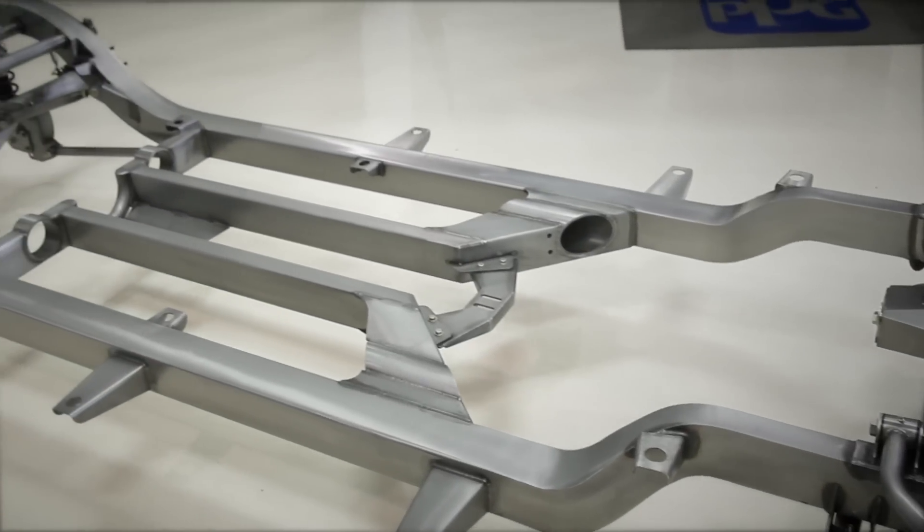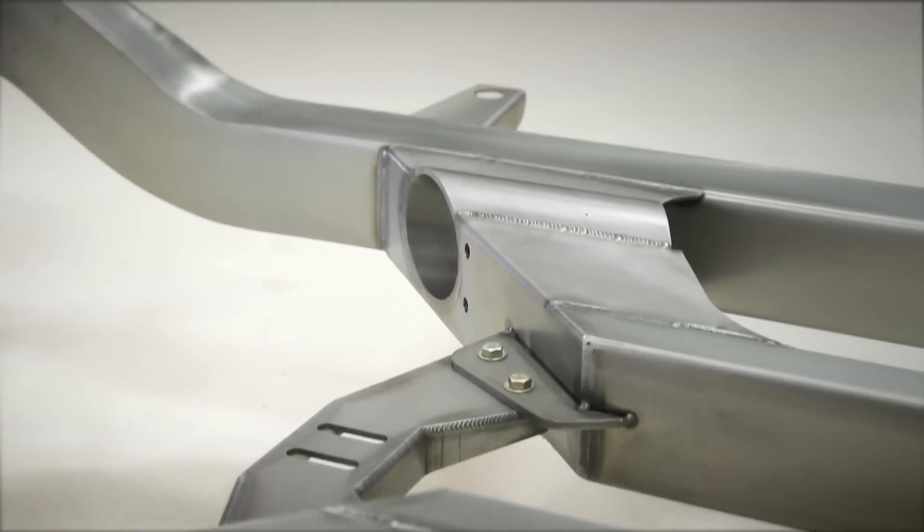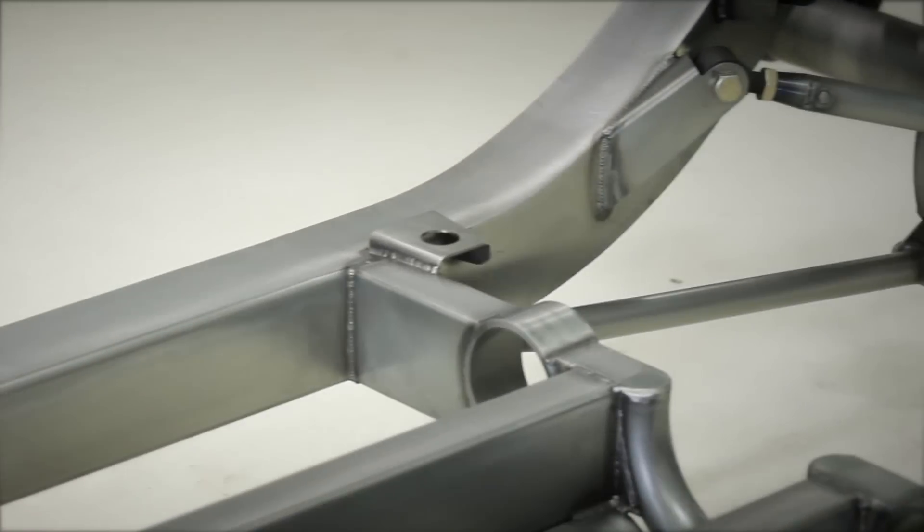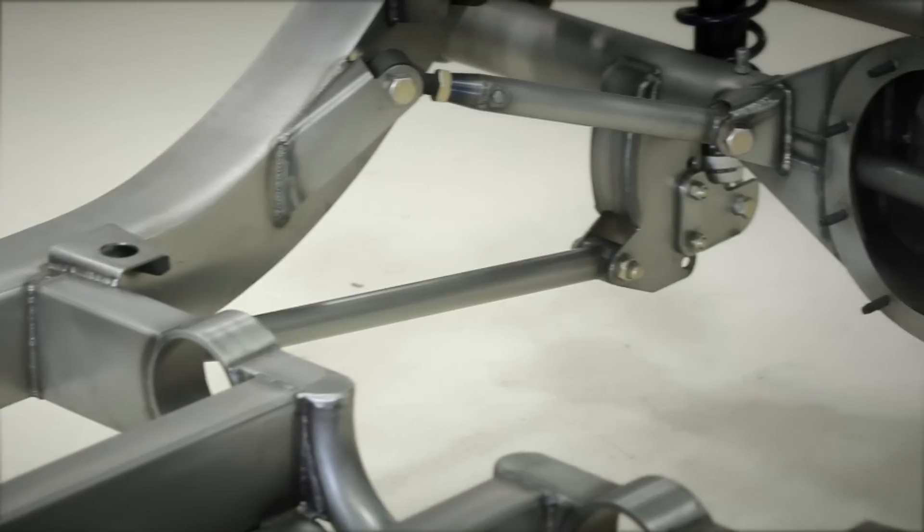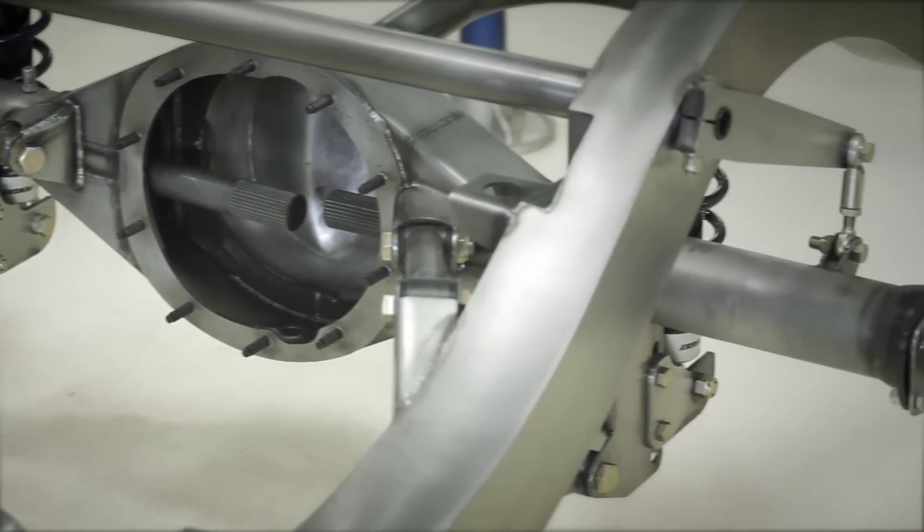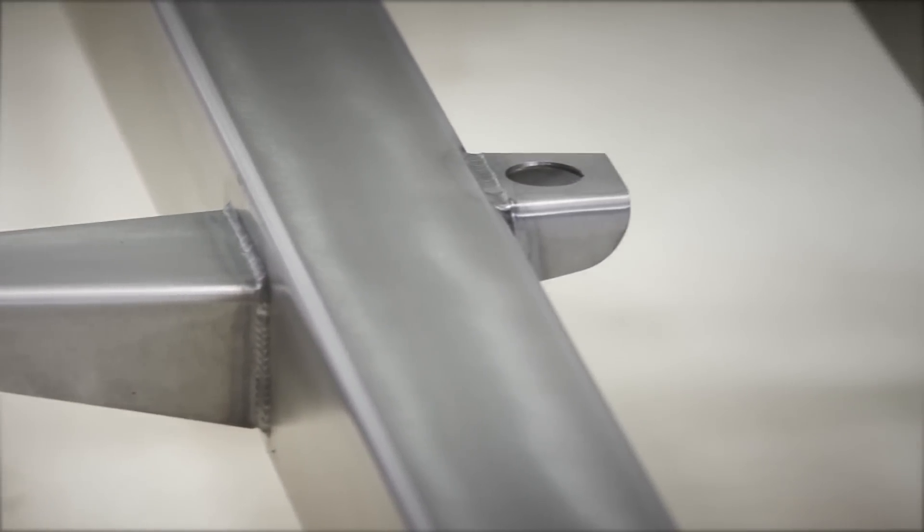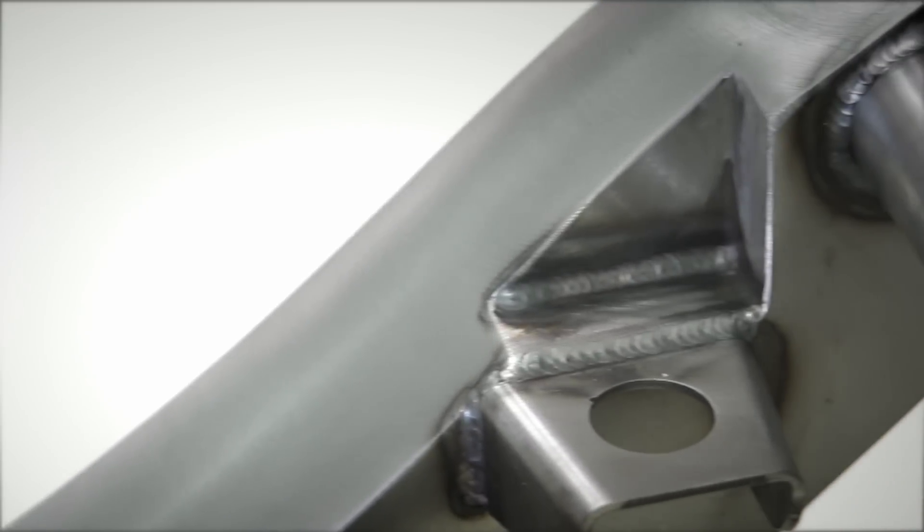One of the things that sets our chassis apart from the others on the market is the main 4x4 frame rail. This allows the same frame to be used under a convertible as you would under a hardtop or sedan car and eliminate any of the flex that you would normally have. There are different body mount configurations, but the frame is the same for all models.